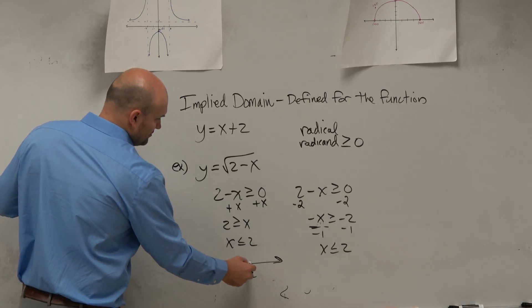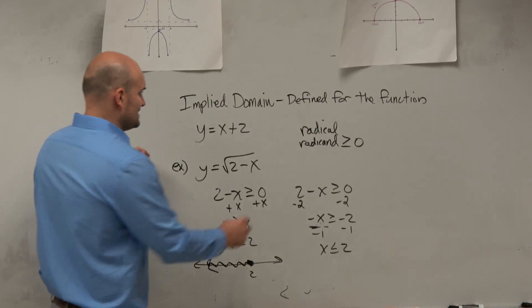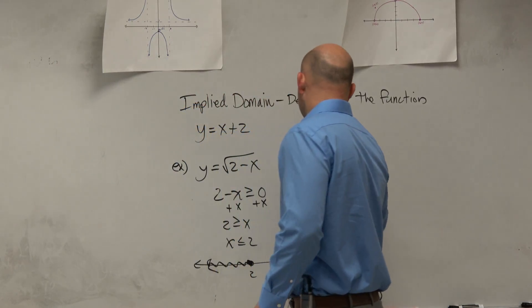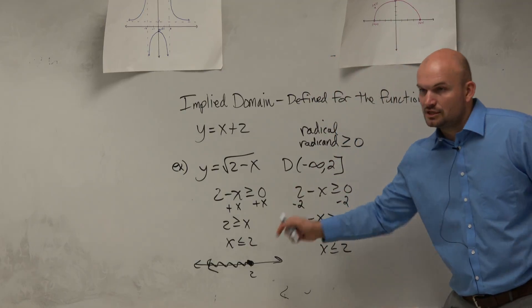Here's 2, okay. And then saying, all right, the interval for that is going to be negative infinity to 2, where since it's included, it's going to be a bracket.